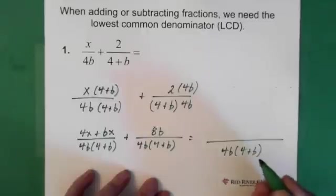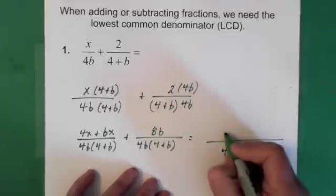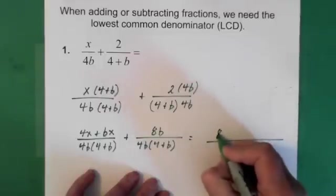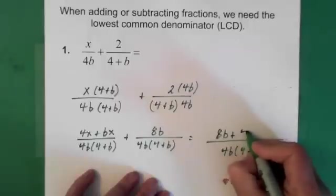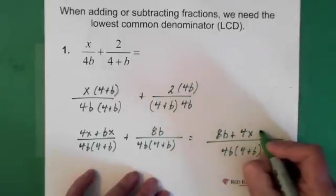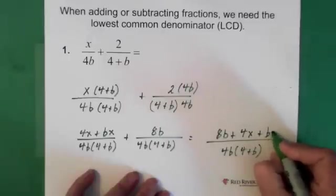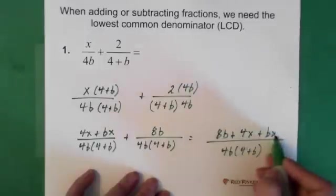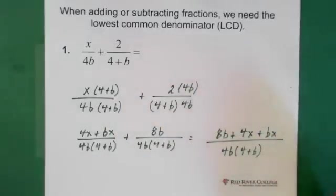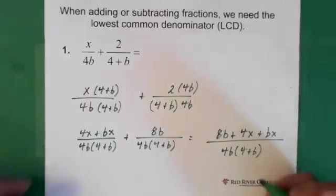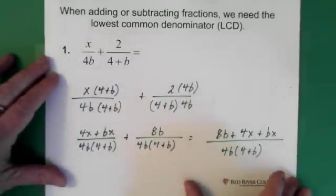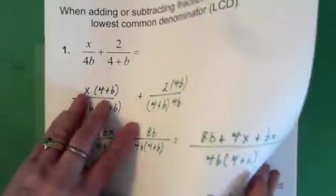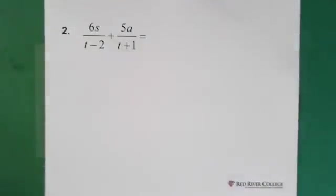I'm going to put the 8b first. So we have 8b plus 4x plus bx. We can't combine any of these here. And we can't reduce anything. So this one is finished. Alright, next question.